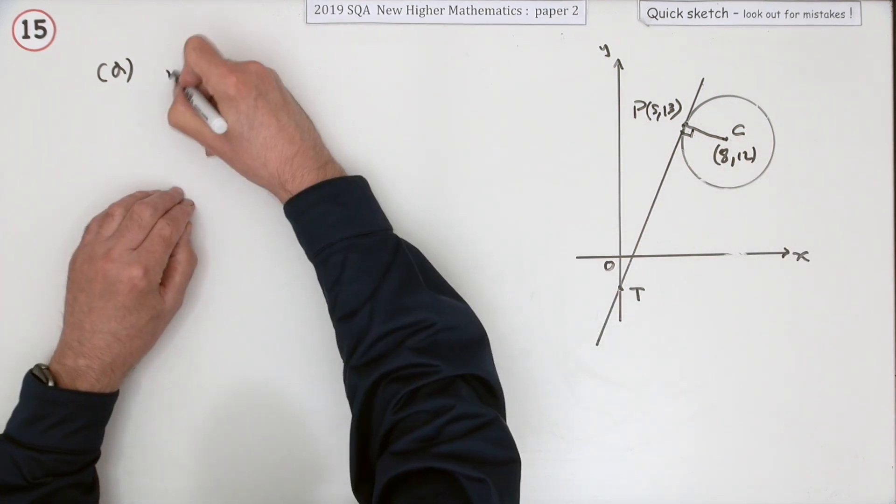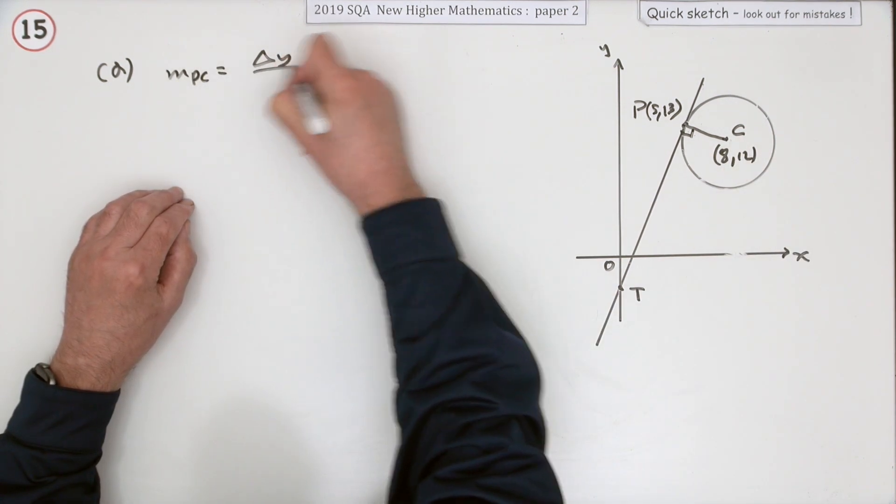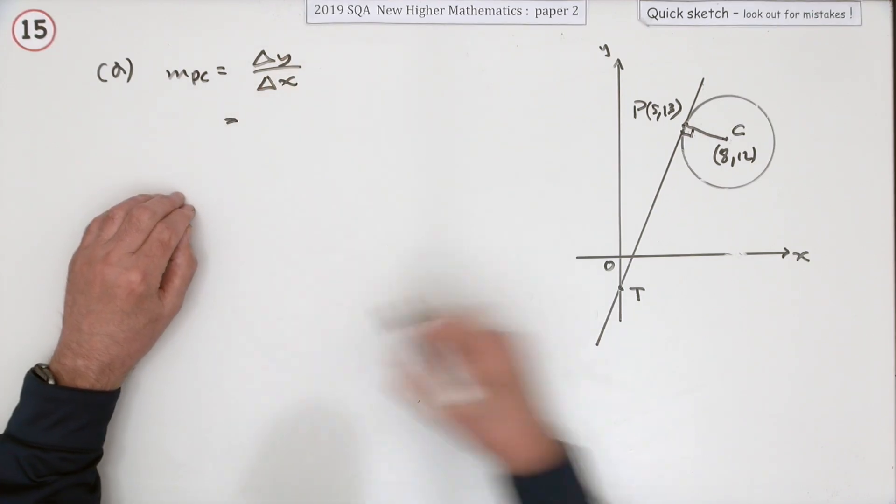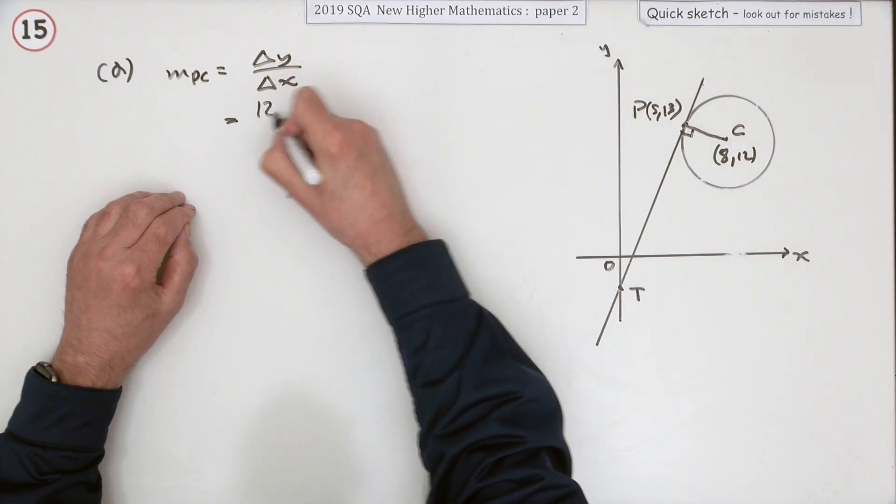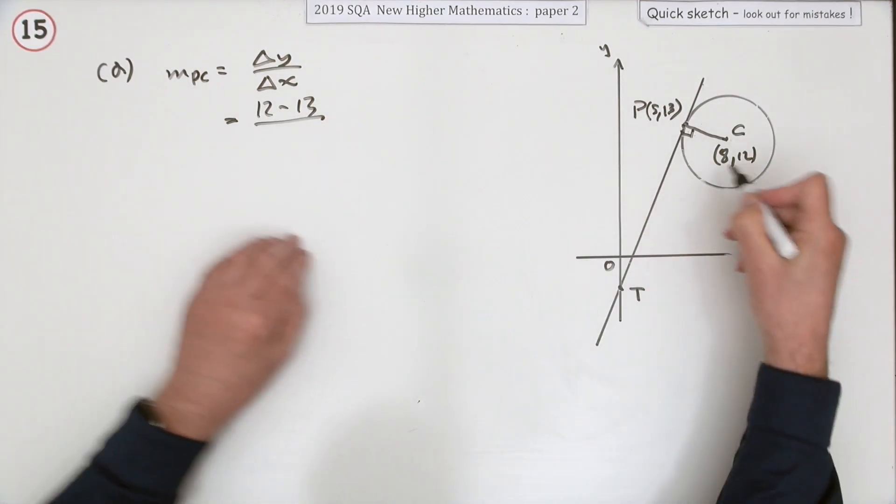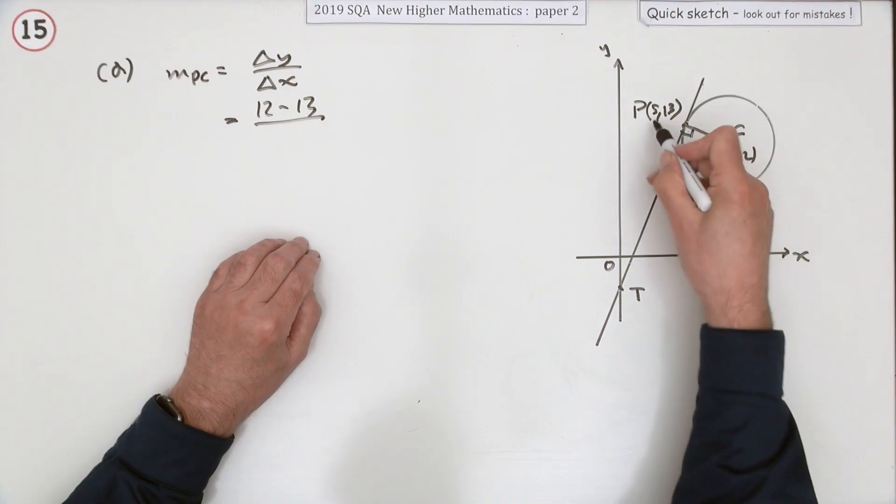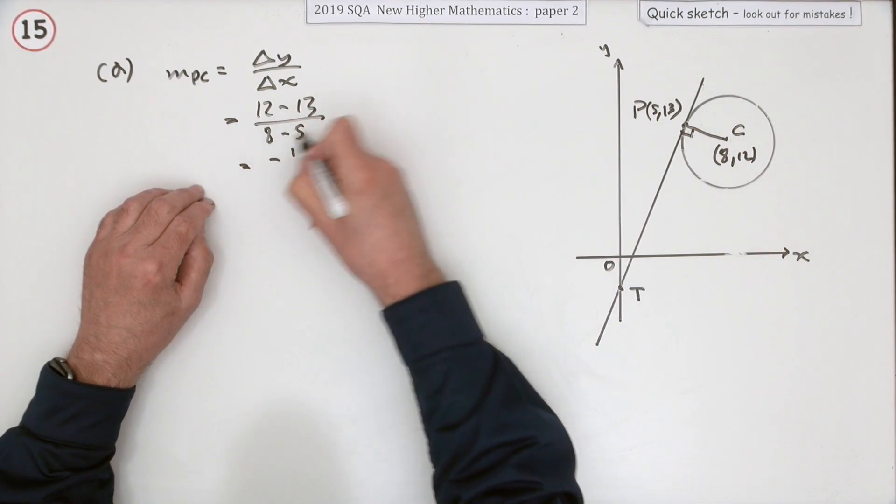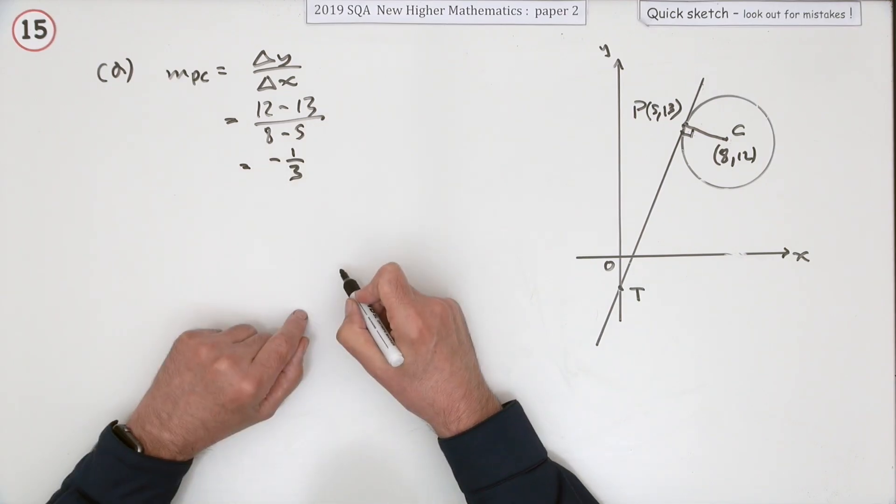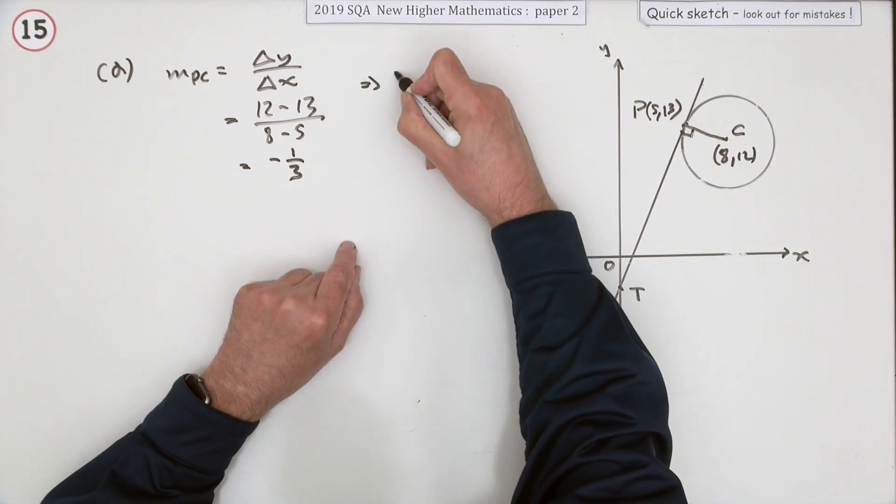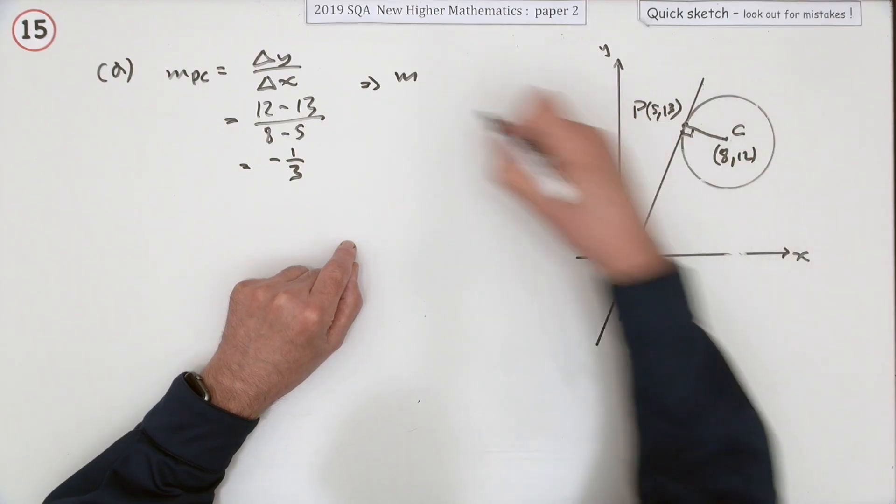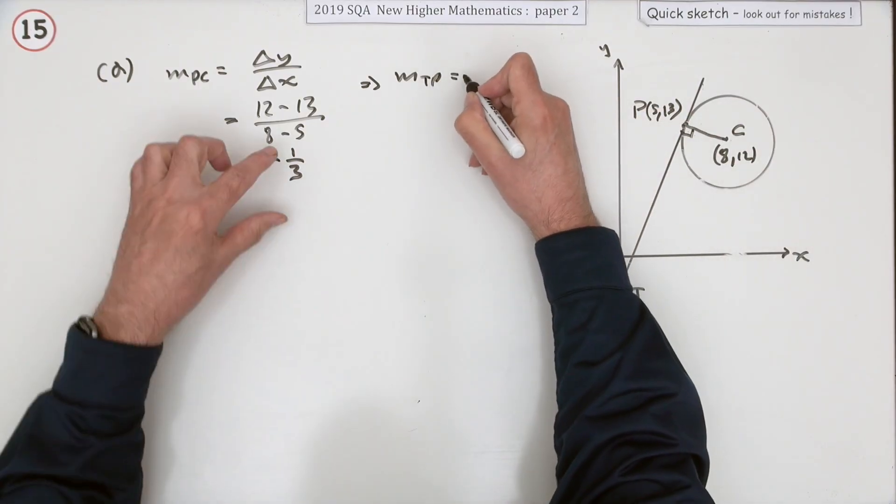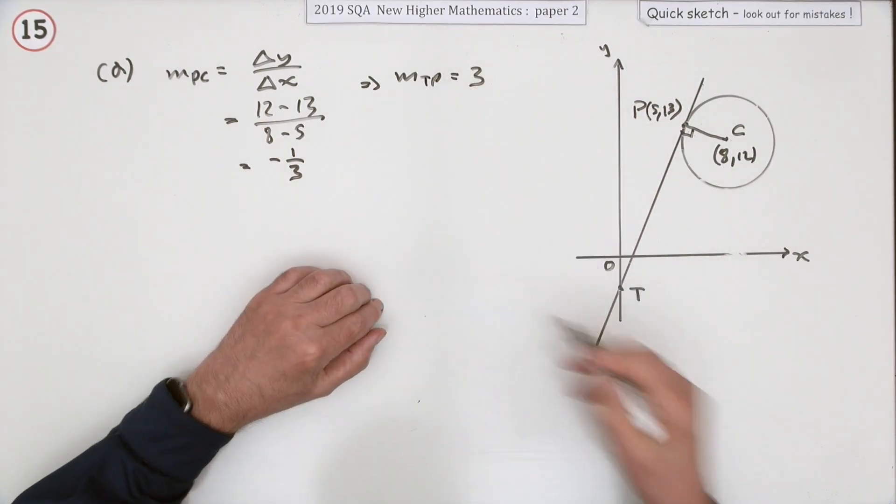So what's the gradient of that radius? Difference in the y over difference in the x. 12 take away 13. Difference in the x is in the same order, 8 take away 5. So that's negative 1 upon 3. So immediately the gradient of the tangent is going to be the negative of the reciprocal, which is 3.